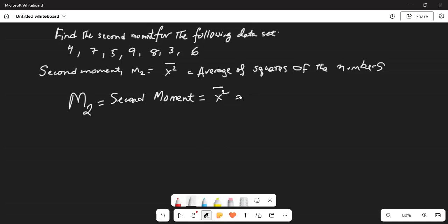So, that is equal to sum of all, average of all x square. So, that is equal to sum. This is sum of x square divided by population size.